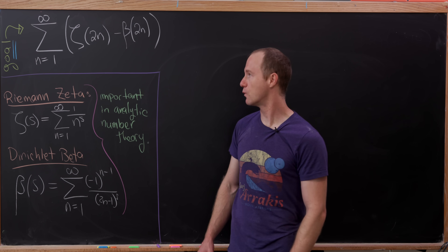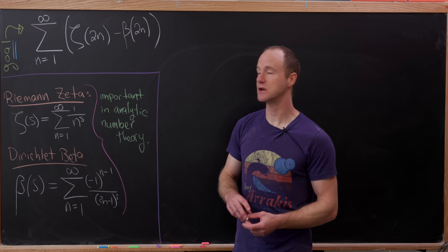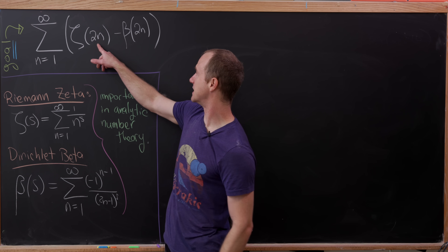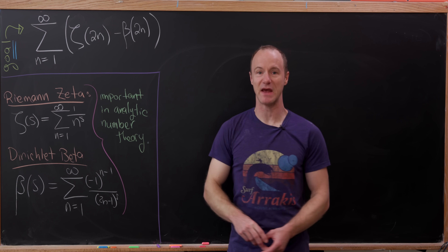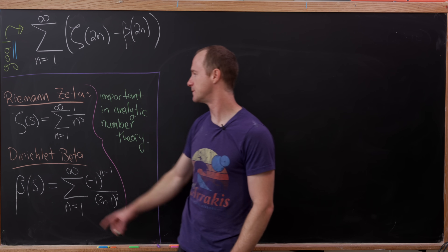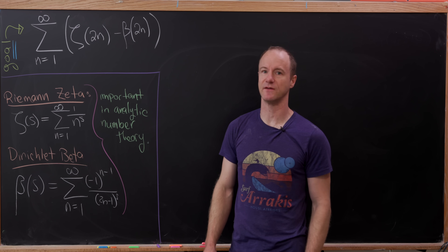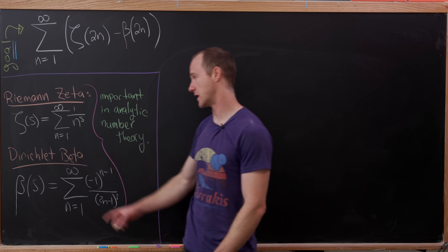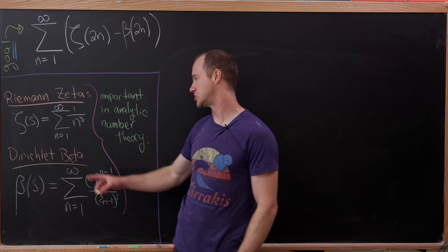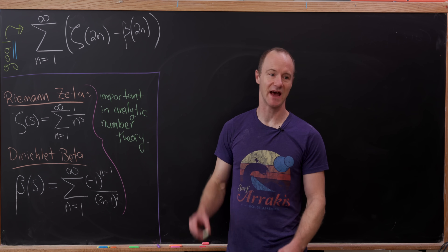Our goal is to find the sum as n goes from 1 to infinity of zeta evaluated at 2n minus beta evaluated at 2n. The zeta function here is the Riemann zeta function, defined by zeta of s equals the sum as n goes from 1 to infinity of 1 over n to the s.